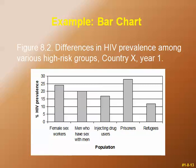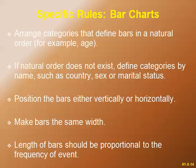The HIV prevalence percentage from 0 to 30 percent is shown on the y-axis. Specific rules for bar charts: arrange categories in a natural order, such as age. If no natural order exists, define categories by name such as country, sex, or marital status. Position bars either vertically or horizontally, make bars the same width, and the length of bars should be proportional to the frequency of events on the y-axis.